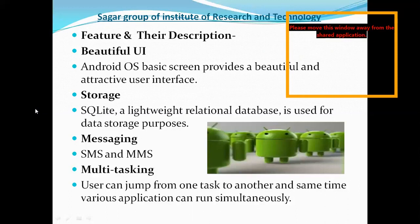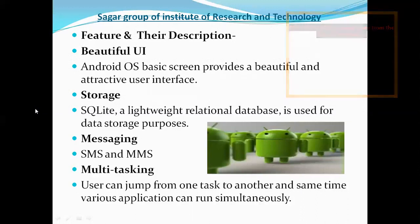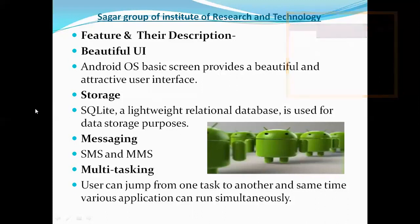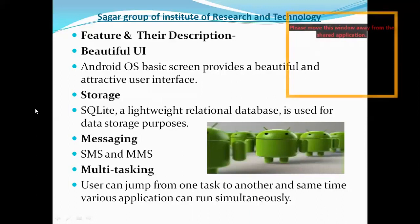The user can jump from one task to another, and at the same time various applications can run simultaneously. For example, in your mobile phone or tablet, when you attend a Zoom meeting and you receive a call at that time, the meeting gets muted. And at the same time, if you have a message on WhatsApp, you can reply to it. So these three tasks you can do at one time — that is called the multitasking of the system, a key feature of any Android system.